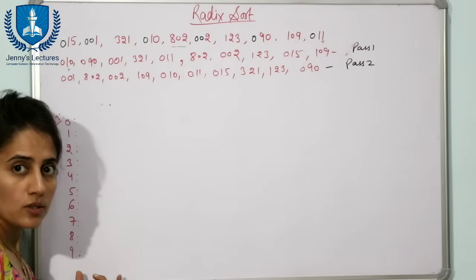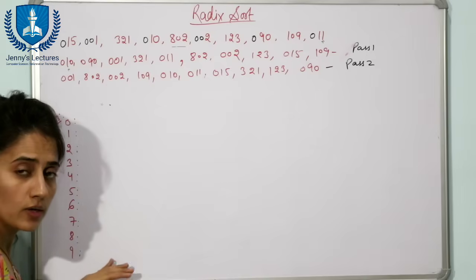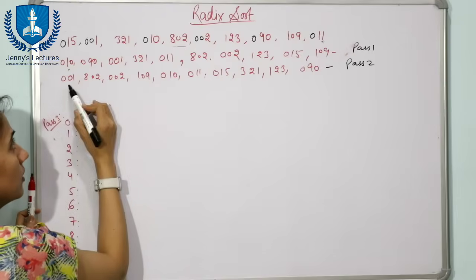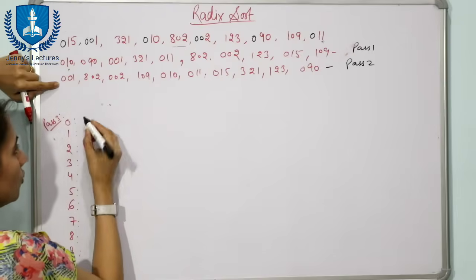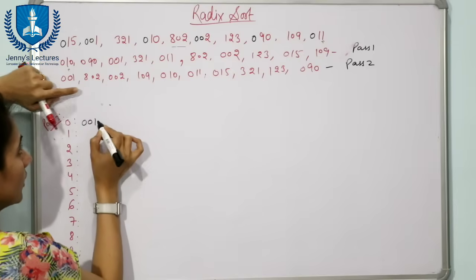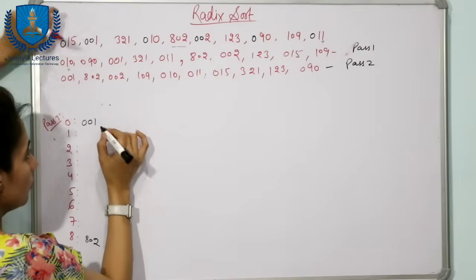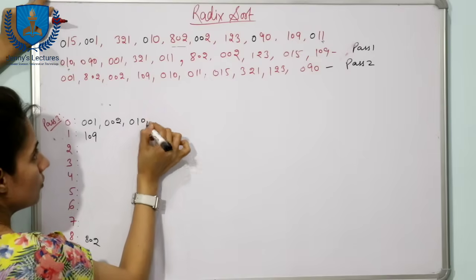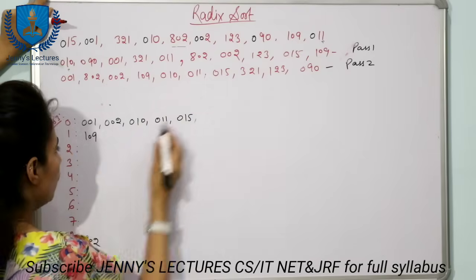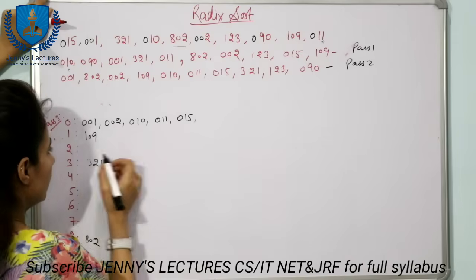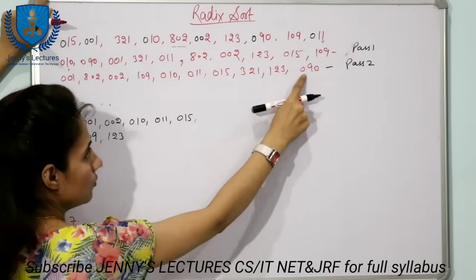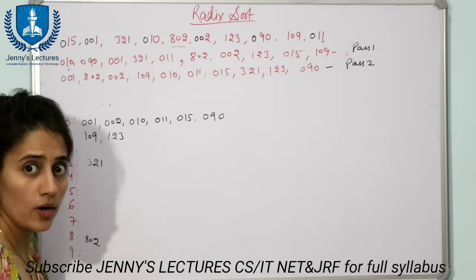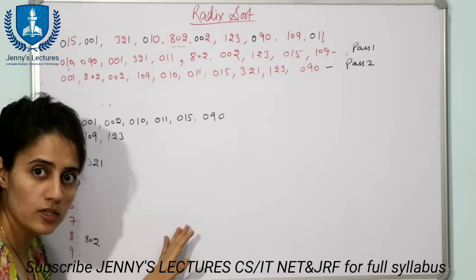In Pass 3 we take 10 buckets ranging from 0 to 9. We look at the hundreds digit of each number from the Pass 2 output. Numbers with hundreds digit 0 go to bucket 0, 8 goes to bucket 8, and so on. We fill all the buckets based on the hundreds place digit, then remove data from the buckets again.